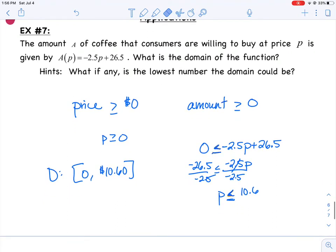Let me show you an example. Example number seven says the amount A of coffee that consumers are willing to buy at price P is given by this equation. What is the domain of the function?